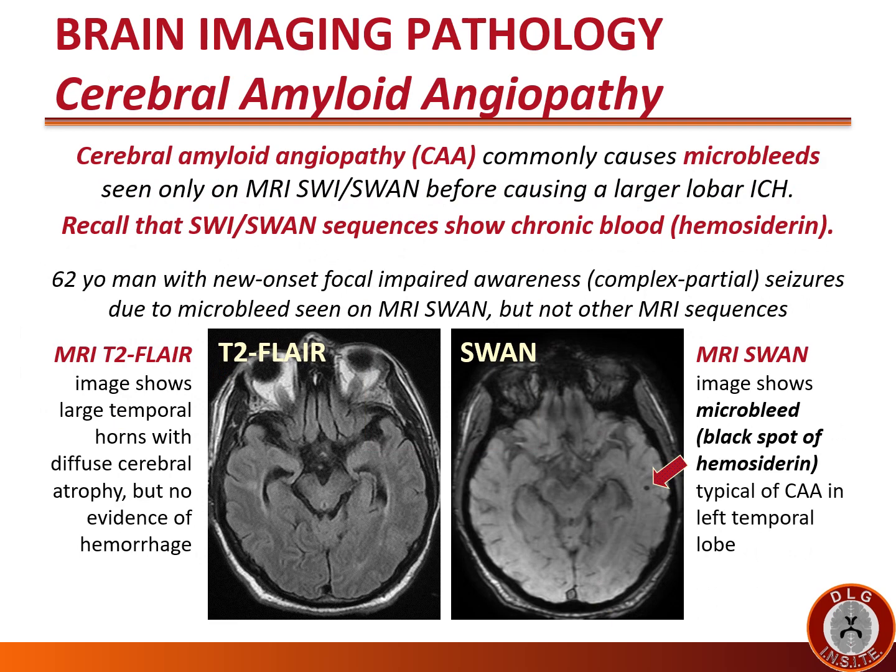Cerebral amyloid angiopathy is the most common cause of lobar hemorrhages in elderly patients, particularly those with dementia or mild cognitive impairment. It commonly causes microbleeds seen only on MRI SWI or SWAN sequences before causing a larger lobar hemorrhage. SWI/SWAN sequences show chronic blood — hemosiderin — for the life of the patient. In this case, a 62-year-old man has new-onset complex partial seizures due to a microbleed seen on MRI SWAN but not on other MRI sequences. The MRI T2 FLAIR shows large temporal horns consistent with diffuse cerebral atrophy and possible dementia, but no hemorrhage, whereas the MRI SWAN shows a microbleed — a black spot of hemosiderin — typical of cerebral amyloid angiopathy in the left temporal lobe.